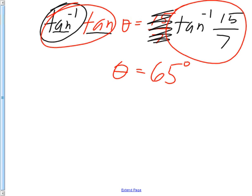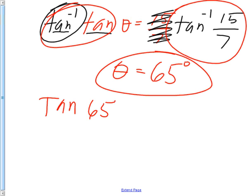Now to bring back some stuff I said yesterday. We just figured out that the tangent of 65 degrees was our answer of 15 sevenths. Do you have any idea what cotangent of 65 would be? Cotangent is the evil twin of tangent.